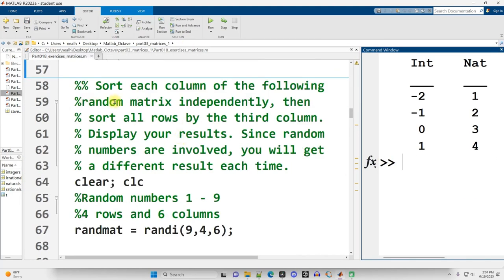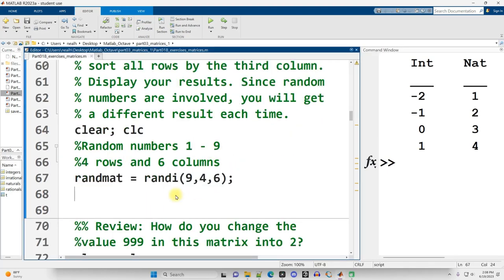Sort each column of the following random matrix independently. Then sort all rows by the third column. Display your results. Since random numbers are involved, you will get different results each time. Okay. So if I just want to sort the columns independently. And let's actually start off by displaying out random at here.